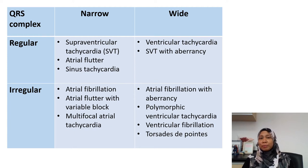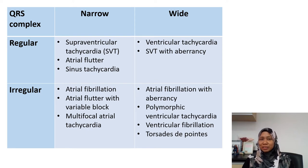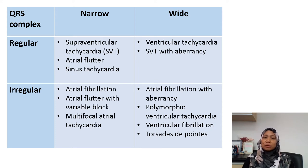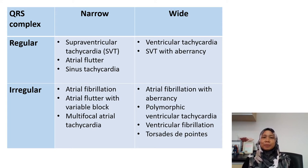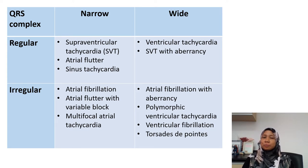For regular wide complex, most of the time it is ventricular tachycardia, but we also have to differentiate it with SVT with aberrancy. Aberrancy is an abnormal pathway — it is actually an SVT, however because the conduction pathway is not right, the patient can have a broad complex like in bundle branch block. So a patient with SVT can also present with regular wide complex tachycardia.